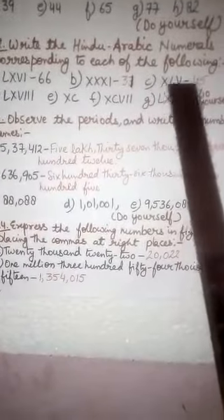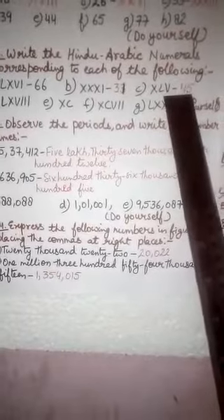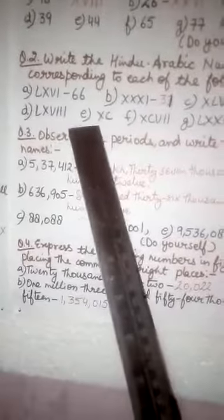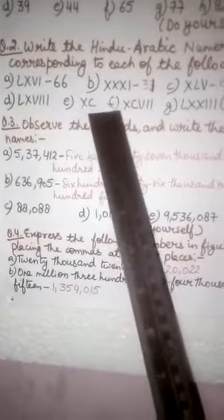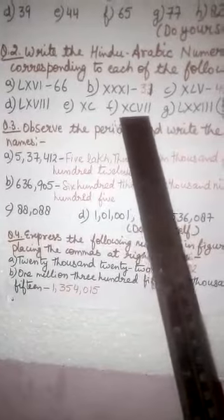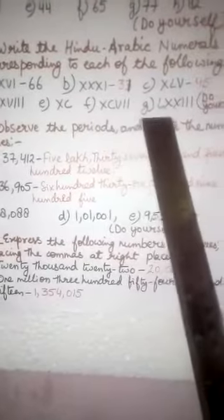Fourth is XL which is 40 and V is 5, 45. D is L, X, V and 3 ones. E is X and C. F is X, C, V and 2 ones. G, L, X, X and triple 1.